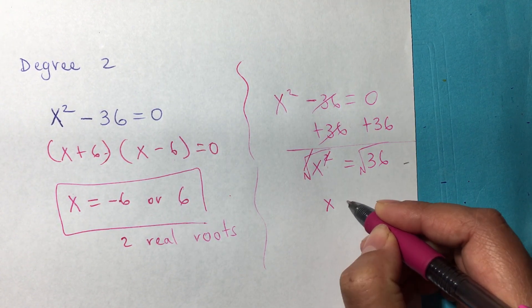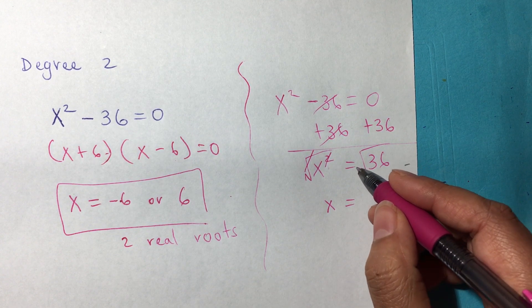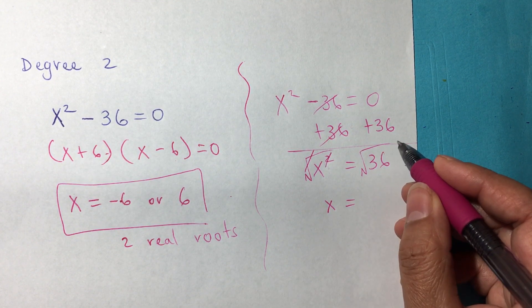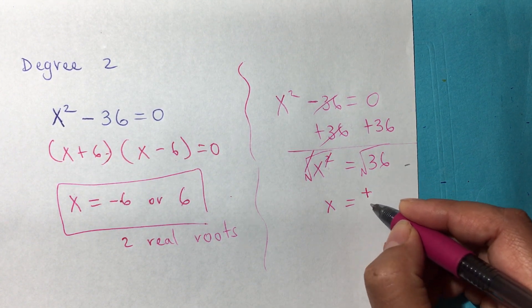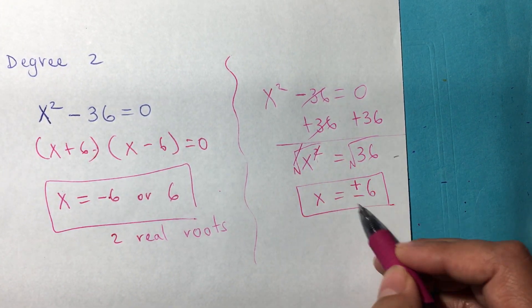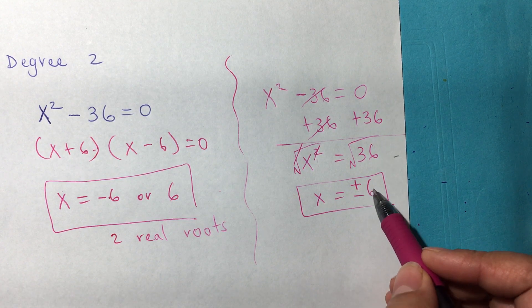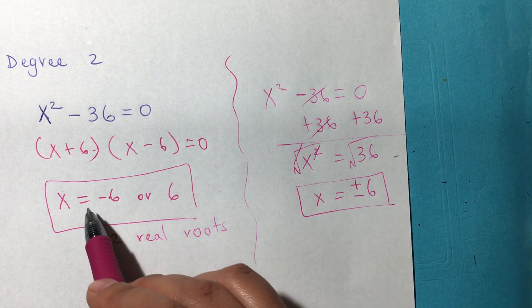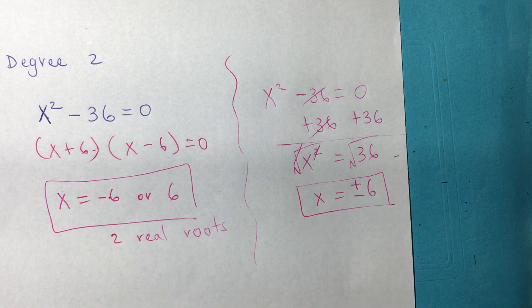But remember that when we have an equation and we take the square root of anything, you always get the positive and the negative of that. So it's positive or negative 6. Those are your two solutions or two answers. One is positive, one is negative.